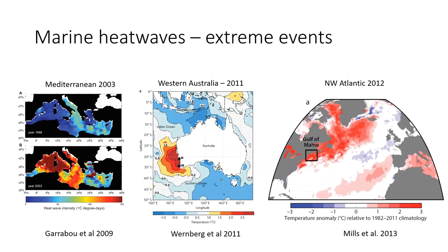Well-known marine heatwaves include the Northwest Atlantic event in 2012, an event off Australia's West Coast in 2011, and the Mediterranean event around 2003, which was perhaps the first and most prominent. The 2003 Mediterranean event was associated with a massive terrestrial heatwave over Europe that killed tens of thousands of people due to heat stress.